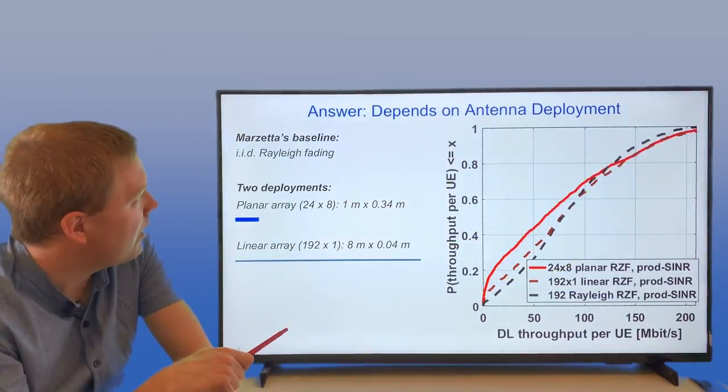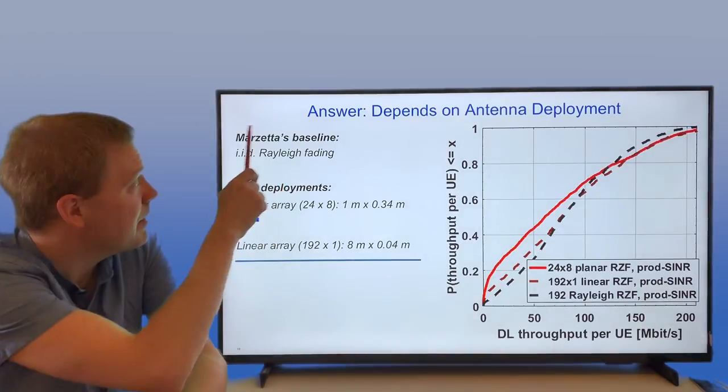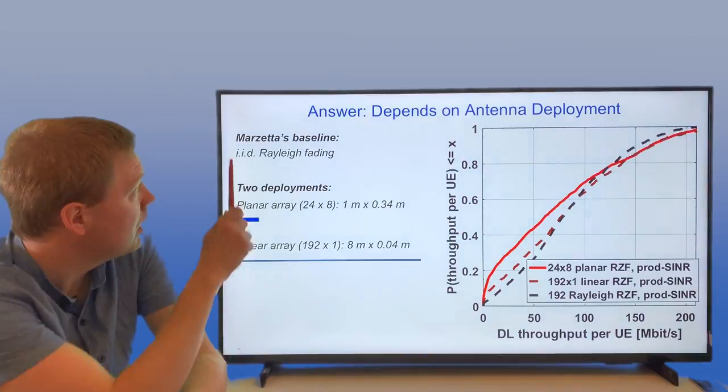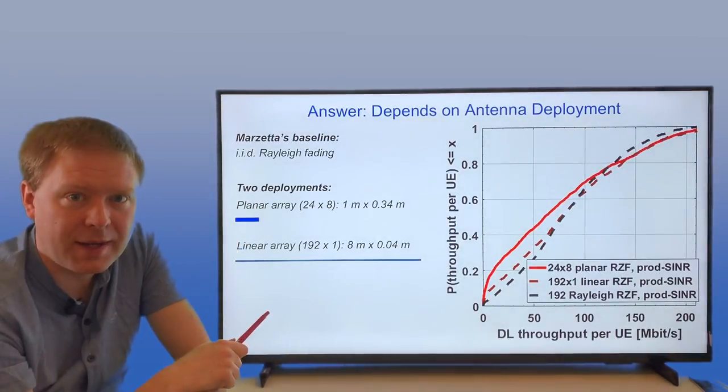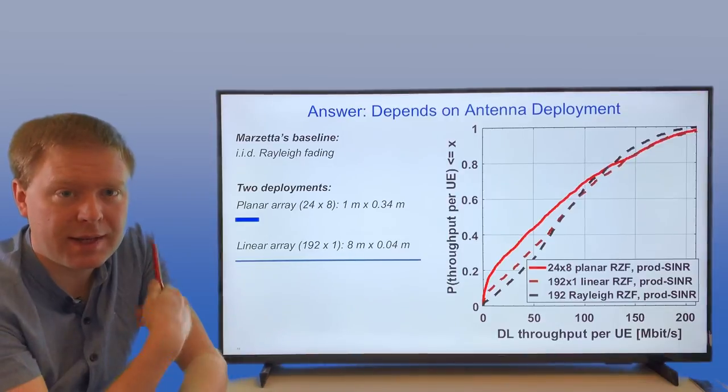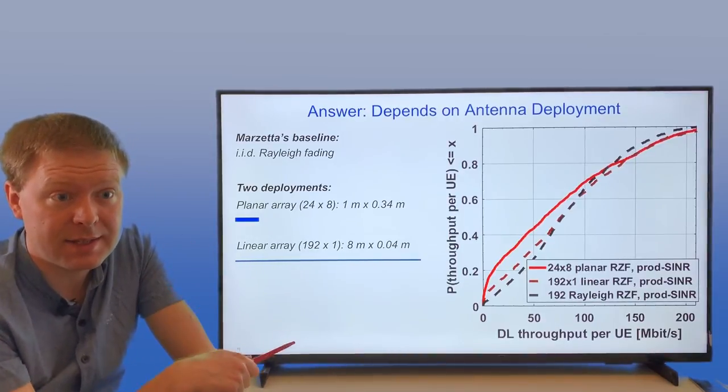What we were comparing were three different setups. The first one was the baseline setup that was proposed in the first paper by Thomas Marzetta on Massive MIMO. It used so-called IID Rayleigh fading, so all of the channel components are Gaussian distributed and independent of each other. Then we were computing the power losses using the setup that we were considering.